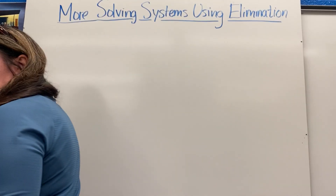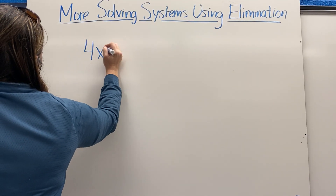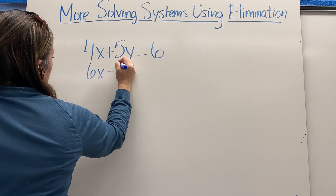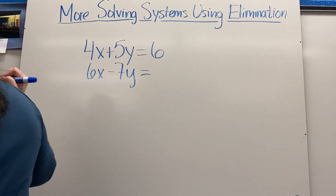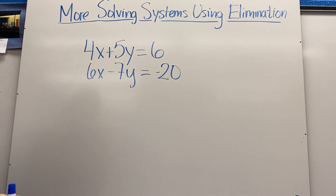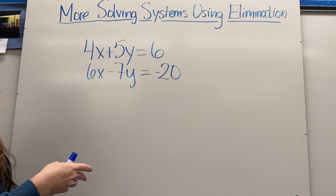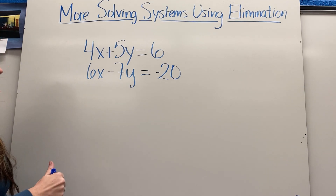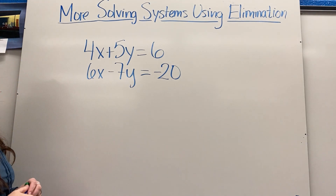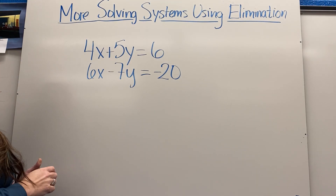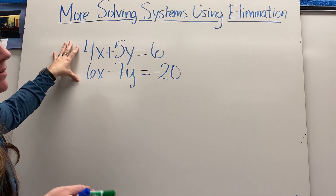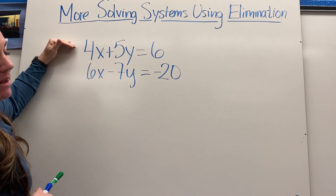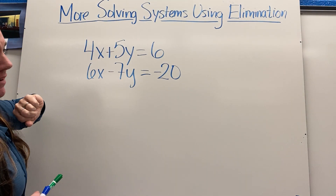Let's look at 4x plus 5y equals 6 and 6x minus 7y equals negative 20. I clearly don't have the same coefficients, nor can I just multiply one equation quickly to match. So I'm going to have to multiply both equations. On x I have 4 and 6; on y I have 5 and negative 7. One approach is to multiply the top by negative 7 and the bottom by 5 to match the y coefficients.